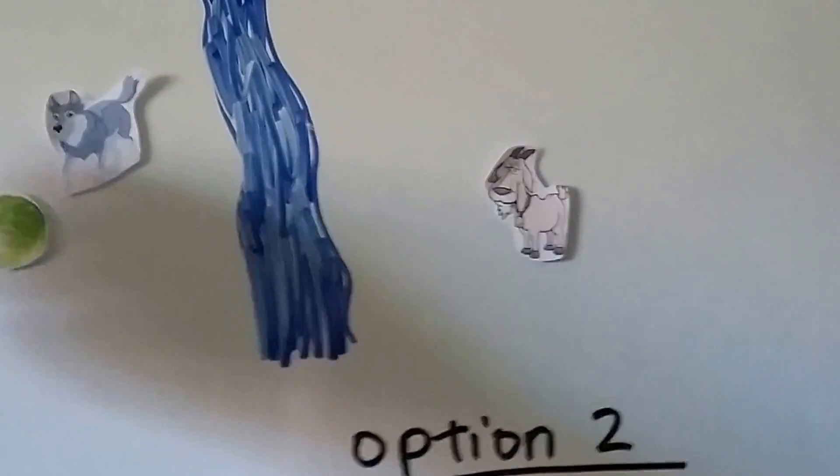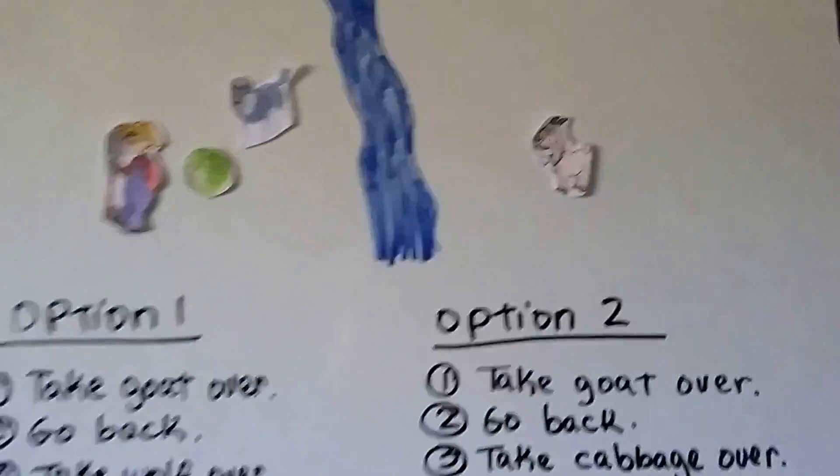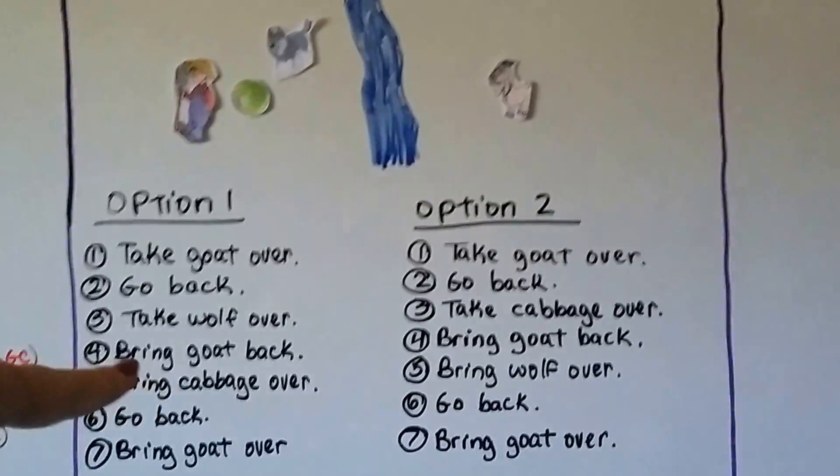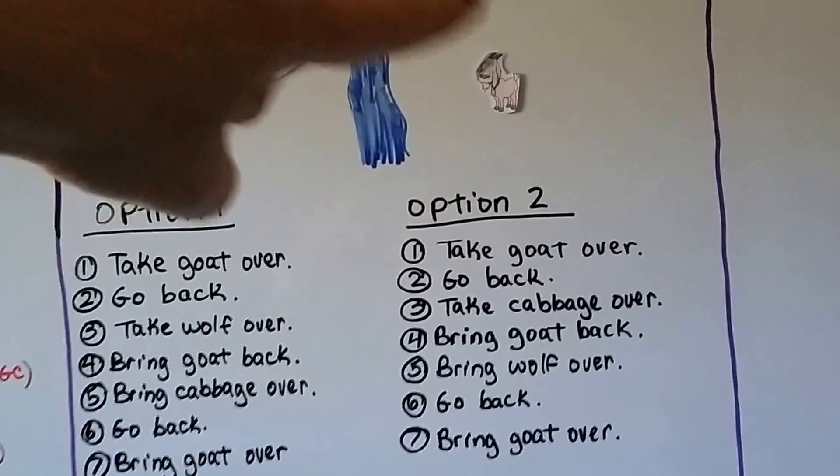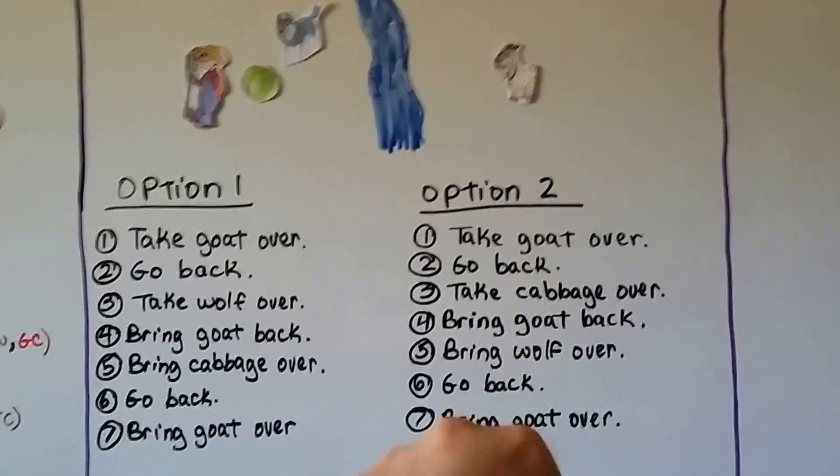He goes back across the river and his options are: if he takes the wolf over, then he brings the goat back with him. Then he brings the cabbage over and goes back and then brings the goat over. Here's the second option.